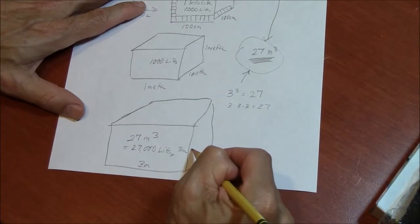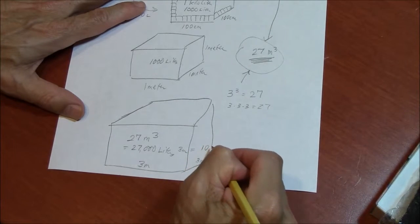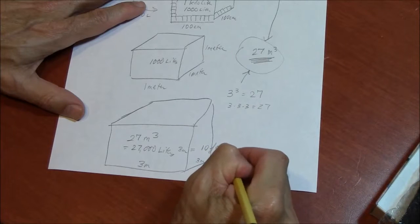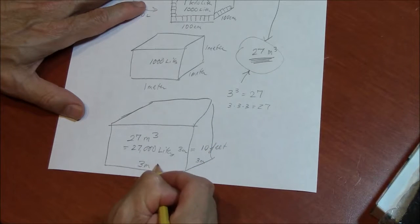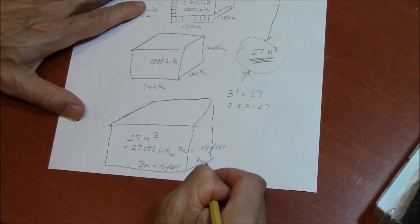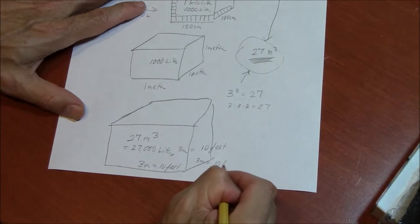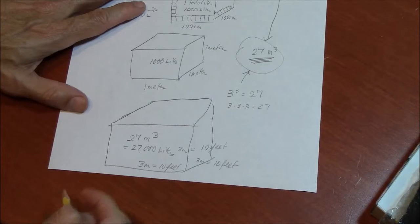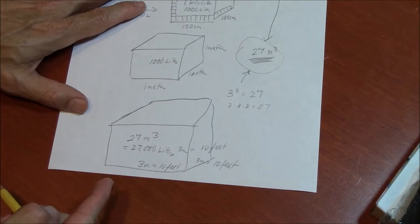And for Americans, 3 meters is 10 feet. So imagine a box 10 feet wide. 10 feet tall. 10 feet deep. And you can see that won't fit in a minivan. It's got to be a truck to carry that.